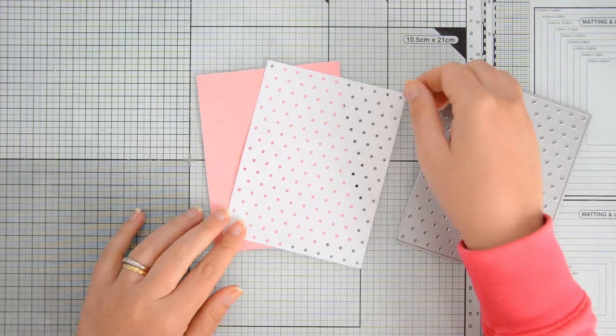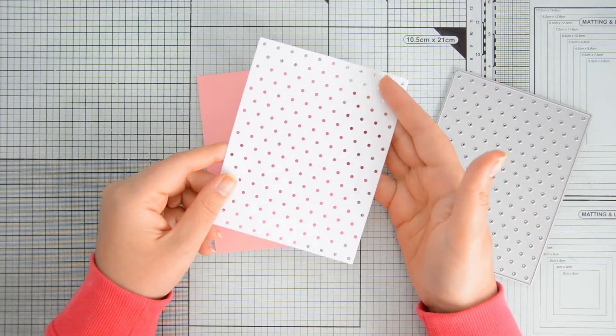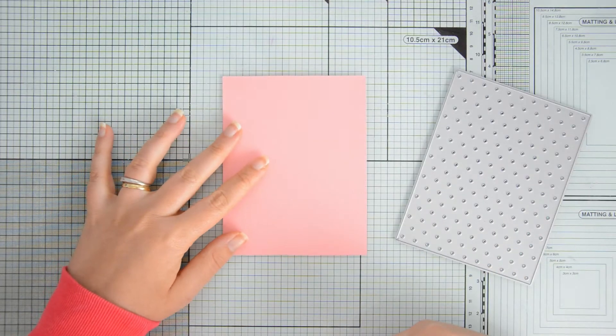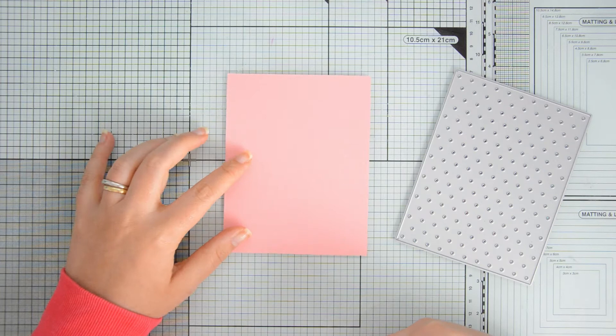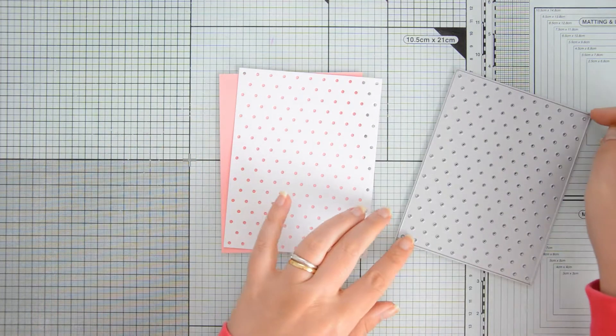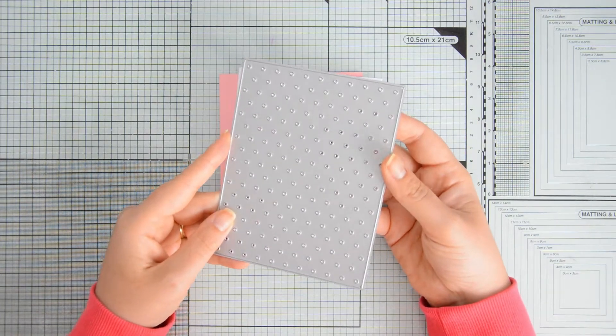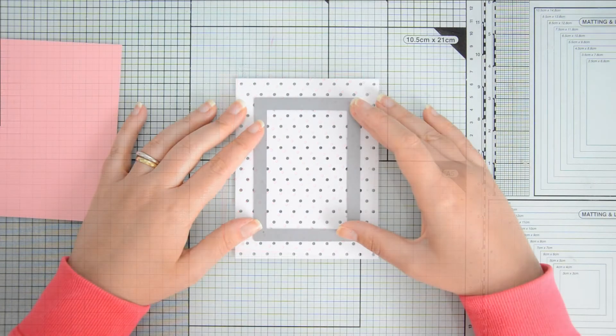I started by creating the base for my card and I die cut some white cardstock as well as some pink cardstock. I just trimmed down the pink cardstock to four and a quarter by five and a half inches, and the die that I used to die cut the white cardstock is the mini polka dots cover die by Studio Katia.